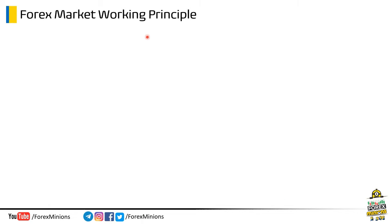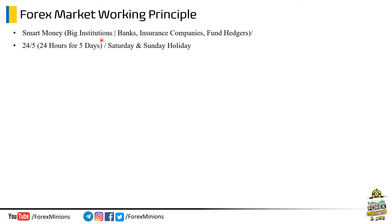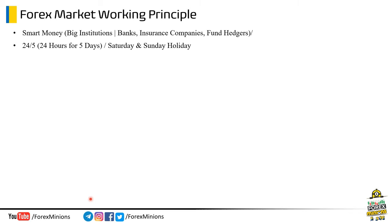Let's start with the Forex market working principle — how the Forex market actually works. Whenever we use the word smart money, it means big institutions, big banks, insurance companies, and hedge fund companies. The Forex market works 24 hours a day and 5 days a week because of our banking system. Saturday and Sunday are off days for banks and big institutions, so they are off trading days in Forex.